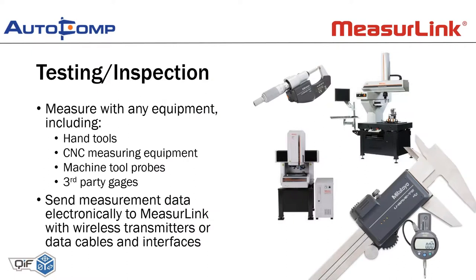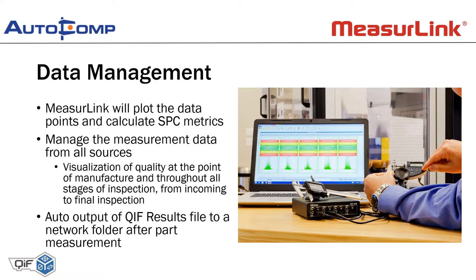Looking more closely after production at testing and inspection: we can measure with any equipment — hand tools, CNC measuring equipment, even on-machine tool probes, or third-party gauges. It's not limited to Mitutoyo tools; really anything that can produce data can get into MeasureLink. We can send measurement data electronically to MeasureLink via wireless transmitters or data cables and interfaces. MeasureLink will plot the data points and calculate SPC metrics, managing measurement data from all these different sources. There will be visualization of quality at the point of manufacture and throughout all the different stages of inspection, from incoming to final. Then there's an auto output of the QIF results file to a network folder after part measurement.